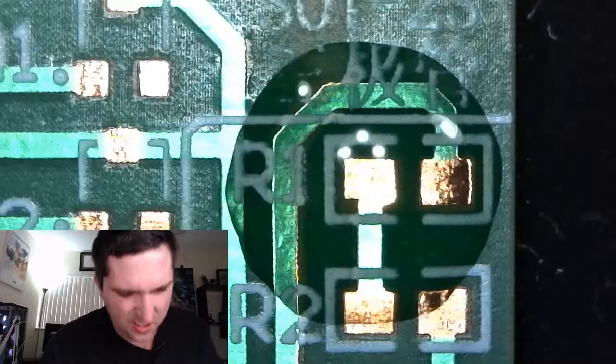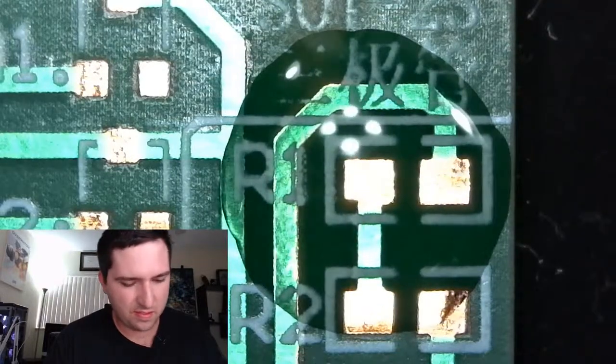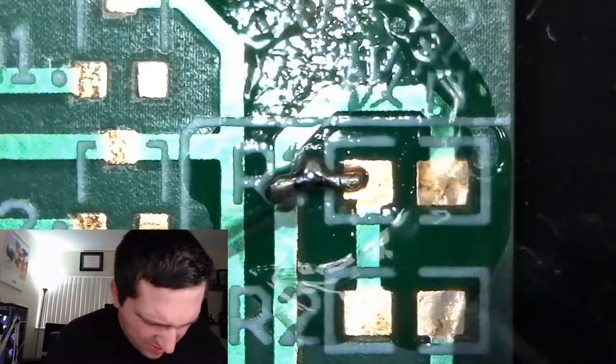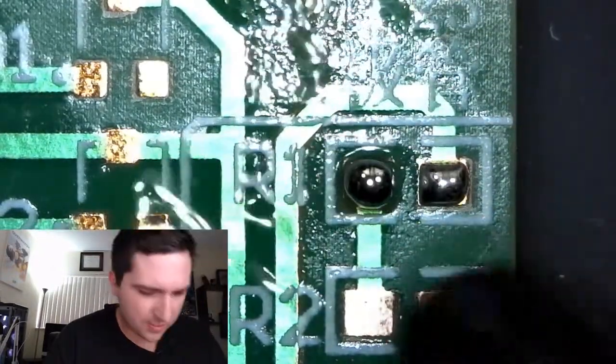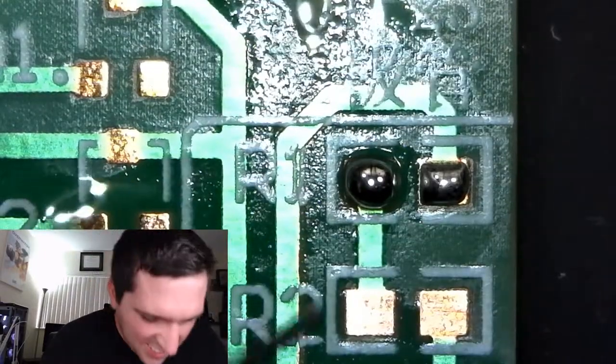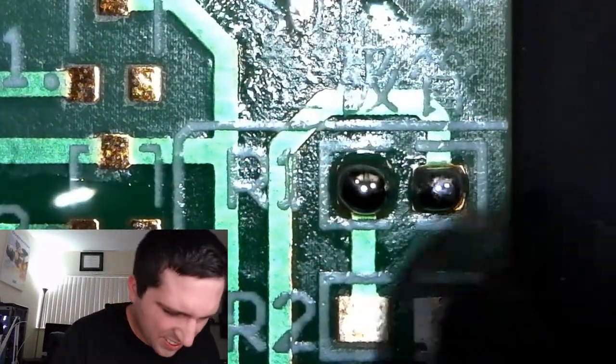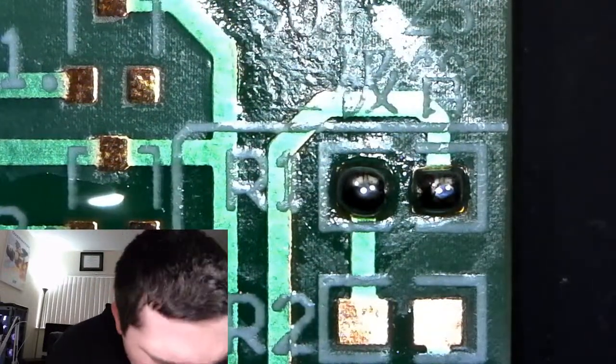So the first one I used was the liquid flux that I didn't mix with the Vaseline. And what you'll notice here is the rubbing alcohol portion of it evaporates really quickly. And that's not much different from regular liquid flux, at least the ones I have.